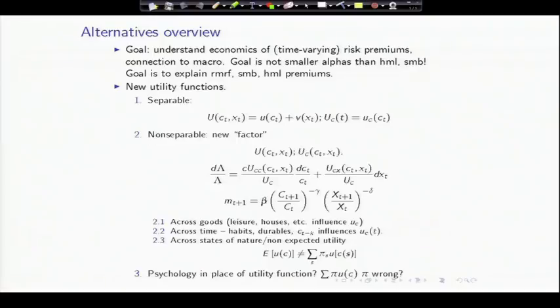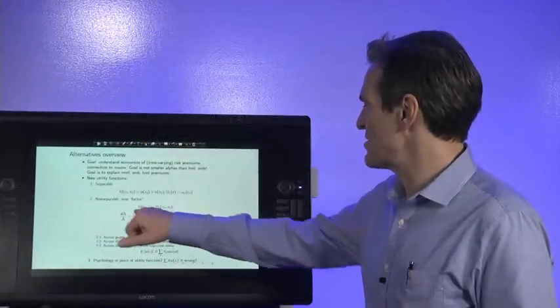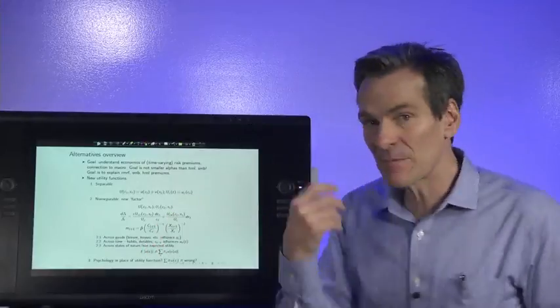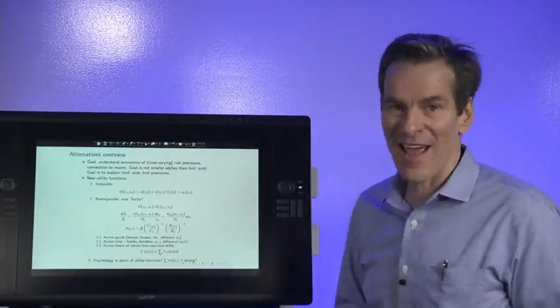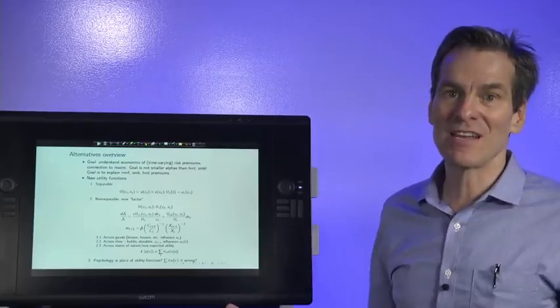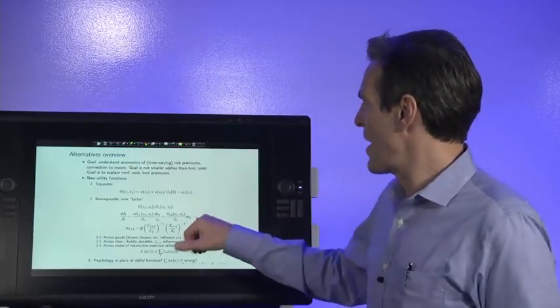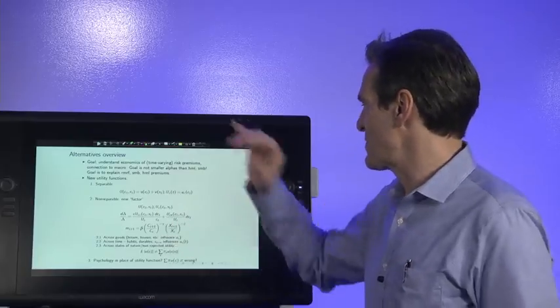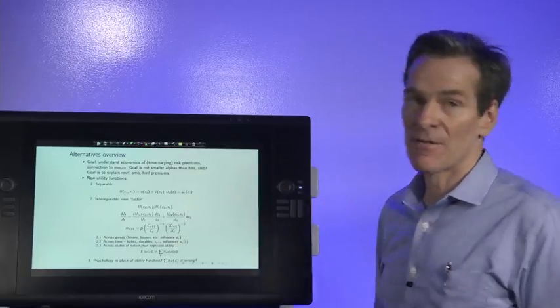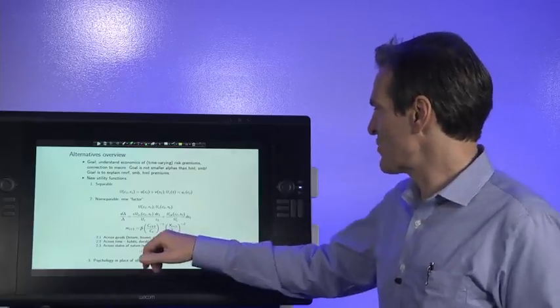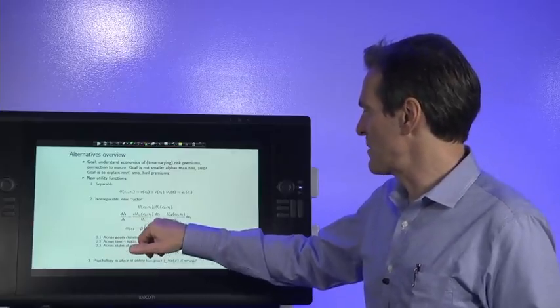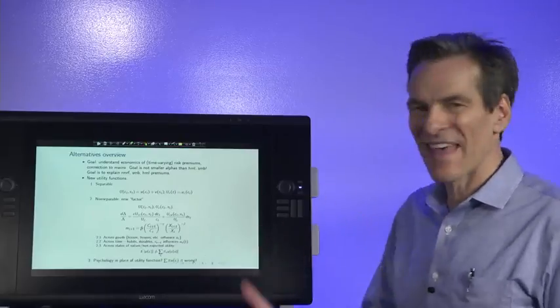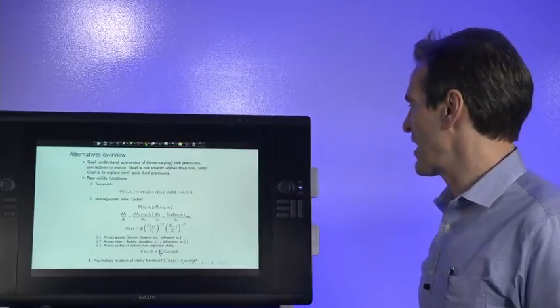So when I take the marginal utility of consumption, it's affected by this other thing x. And in this simple argument here, when u sub c, just take the derivative, when the marginal utility of consumption is affected by this other thing x, you have another factor. That's an easy ingredient for bringing some other factor in. Oh, maybe people aren't scared of consumption growth, they're scared of this other factor x. We'll just make it non-separable in the utility function. Or in discrete time, that leads to consumption to the one power, and this other thing to another power. You can see why that sort of structure kept coming up over and over again.